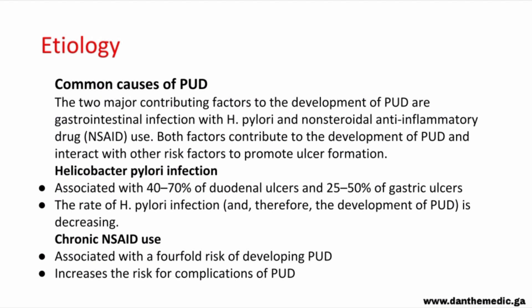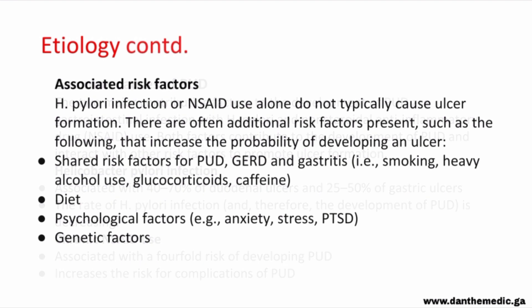People who use NSAIDs are at a fourfold risk of developing peptic ulcer disease, and NSAID use actually increases the risk for complications. H. pylori infection and chronic NSAID use are not always the only causes. Most times there are additional risk factors, including smoking, heavy alcohol use, glucocorticoids, and caffeine — which are shared risk factors for peptic ulcer disease, gastroesophageal reflux, and gastritis.